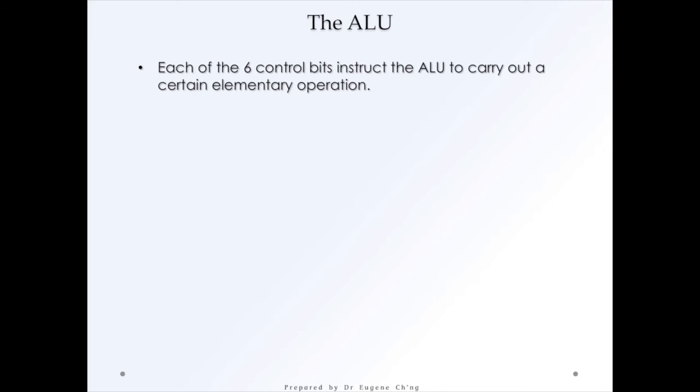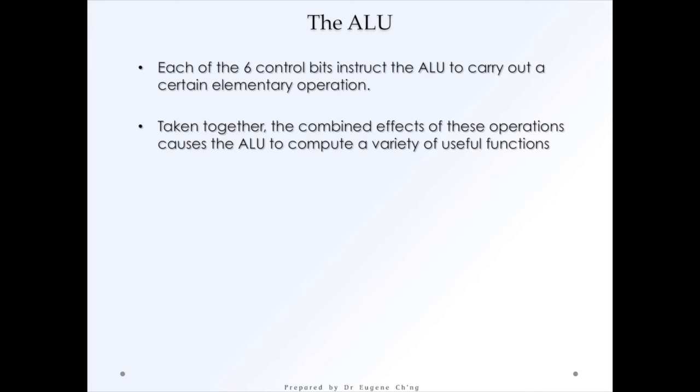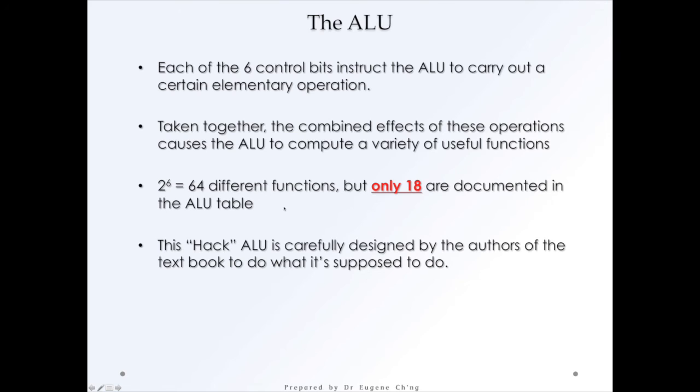So each of the six control bits instructs the ALU to carry out a certain elementary operation. We've just seen that. And taken together, the combined effects of these operations causes the ALU to compute a variety of useful functions. Now, since we have 2 to the power of 6, 64 different functions, because we've got 6 control bits, so it's a base 2. We have actually 64 different functions which we can design for the ALU. But in the case of the Hack computer, it only has 18 which are documented in the ALU table. And this is by design. So the ALU is carefully designed by the authors of the textbook to do what it's supposed to do. And we've just seen how the first row of the operation works. And you could actually try to design your own ALU based on what we have here.